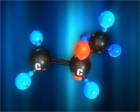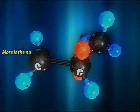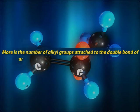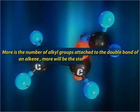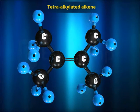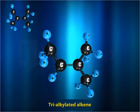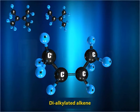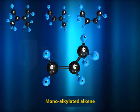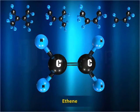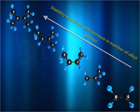Just like the case of carbocations, more alkyl groups attached to the double bond of an alkene means more hyperconjugation and more stability of the alkene. Therefore, tetraalkylated alkenes are most stable, followed by trialkylated alkenes, followed by dialkylated alkenes, followed by monoalkylated alkenes, followed by ethene, which does not have an alkyl group attached to the doubly bonded carbon atoms to exhibit hyperconjugation.